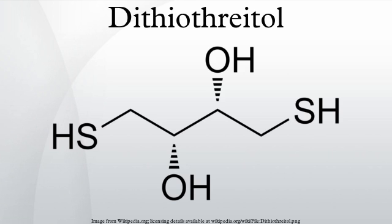DTT can also be used as an oxidizing agent. Its principal advantage is that effectively no mixed disulfide species are populated, in contrast to other agents such as glutathione. In very rare cases, a DTT adduct may be formed — that is, the two sulfur atoms of DTT may form disulfide bonds to different sulfur atoms. In such cases, DTT cannot cyclize since it has no remaining free thiols.